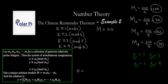X here is going to be A1, which is 1, times M1, which is 105, times Y1, which is 1, plus A2, which is 2, times M2, which is 70, and then times Y2, 1, plus